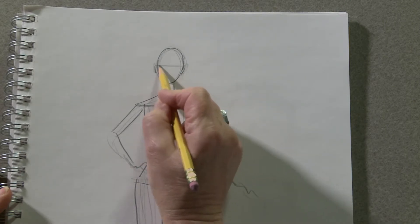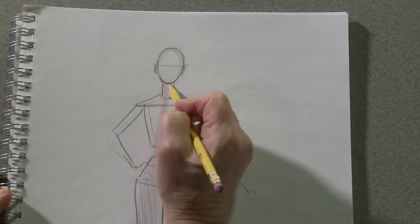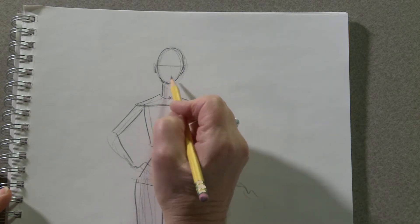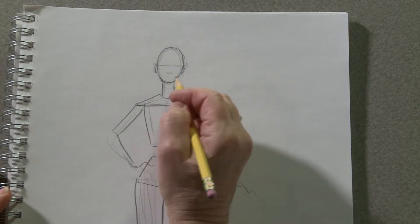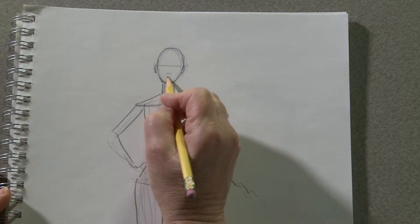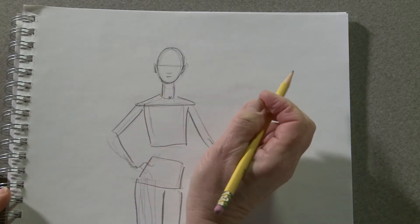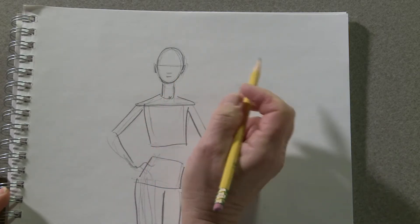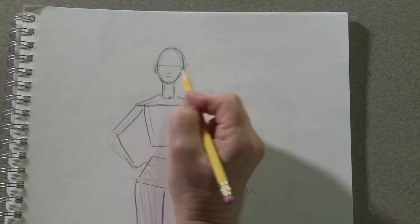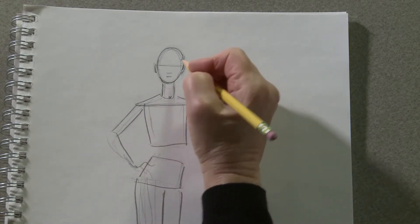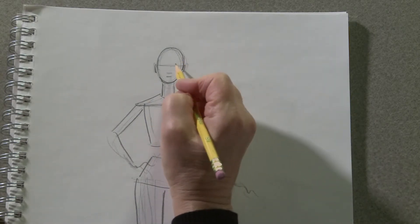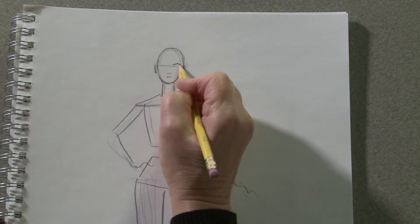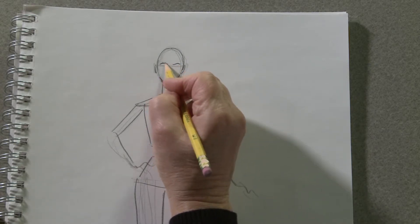In the same way that we did the large face, divide this egg in half, then divide this section in half, and then divide that section more or less in half with the mouth a little above the halfway point between the bottom of the nose and the chin.